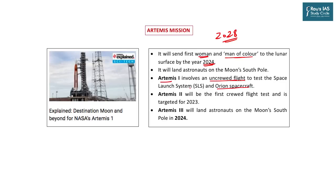Artemis 1 involves an uncrewed flight that will test the Orion spacecraft — NASA's advanced spacecraft for sending human missions into deep space — along with the Space Launch System (SLS), the most powerful launch vehicle in the world. Artemis 1 will be a technology demonstration testing equipment, spacecraft, rockets, engines, and fuel technology. It will also put many CubeSats into space for various testing purposes. Artemis 2 will be the first crewed flight, testing the entire system with crew, but astronauts will not go to the lunar surface — they will travel to lower Earth orbit only.